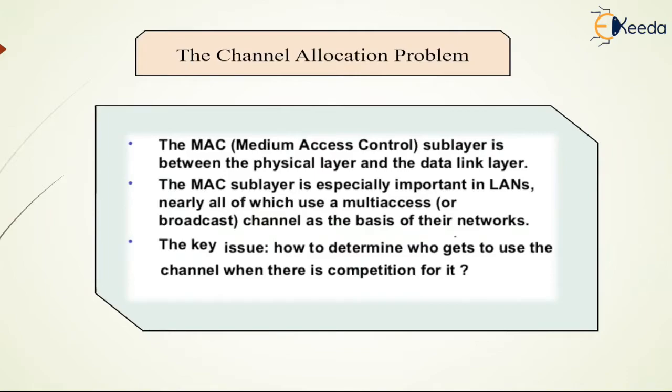When only a single channel is available, determining who goes next is much harder. The protocols used to determine who goes next on a multi-access channel belong to a sublayer of the data link layer called the MAC sublayer. The MAC sublayer is especially important in LANs where multi-access channel is used as a basis for communication.